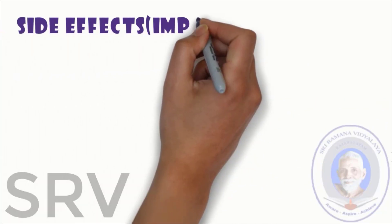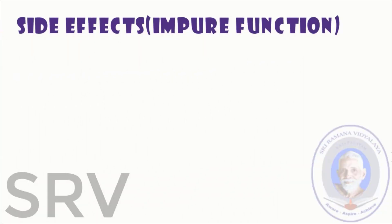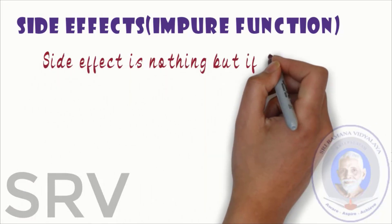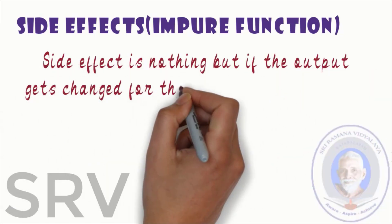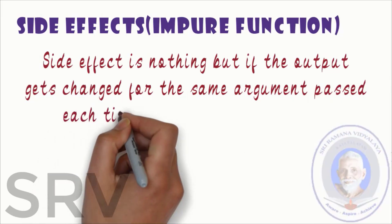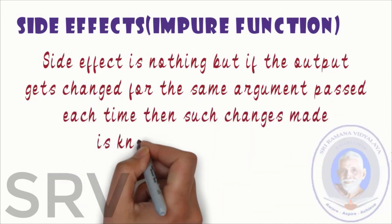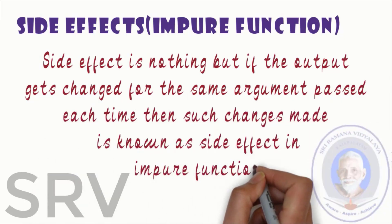Let's see side effects in impure function. Side effect is nothing but if the output gets changed for the same argument passed each time then such changes may be known as side effect in impure functions.